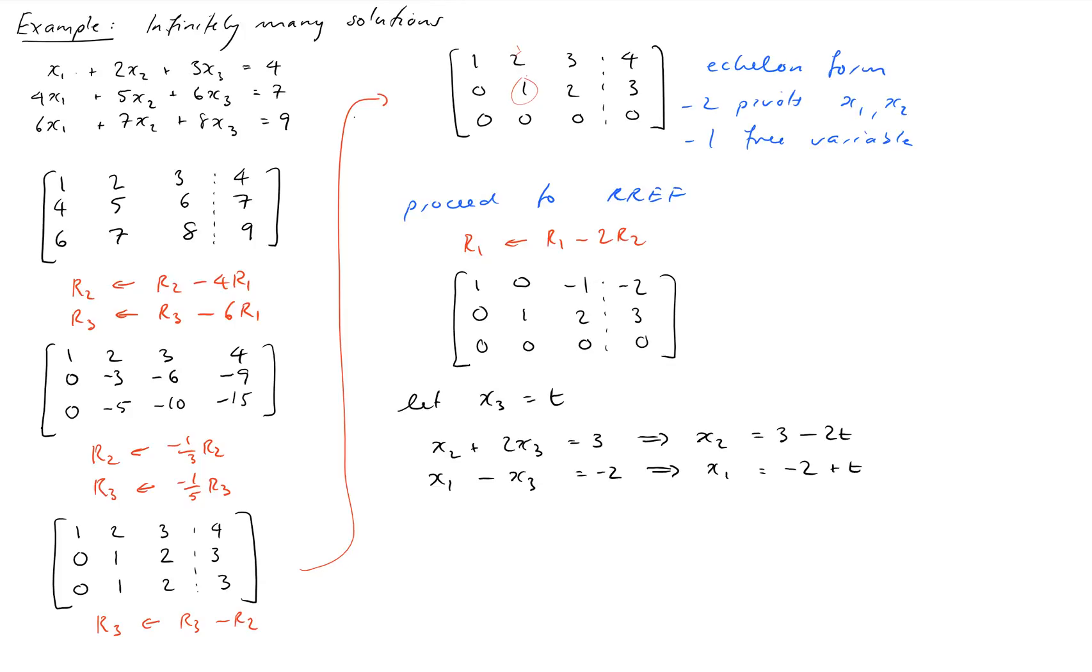Okay we now have an expression for x1, x2, and x3, so we'll write them down first as parametric equations. x1 is negative 2 plus t, x2 is 3 minus 2t, and x3 equals t.